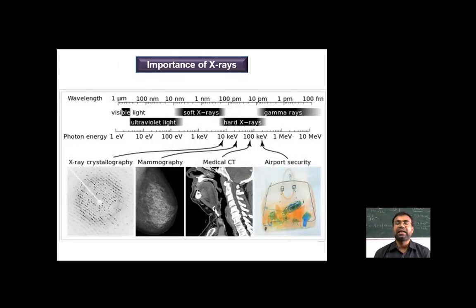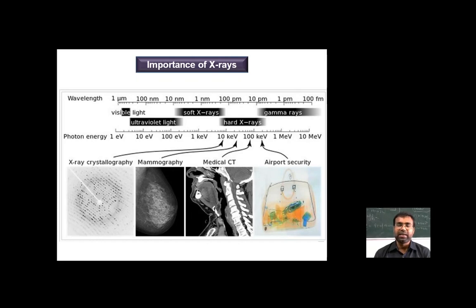X-ray photon energy and wavelength are utilized to examine the internal structure of various materials. Various parameters show the X-ray energy used for different applications: X-ray crystallography uses around 10 kV, while mammography and medical CT scans use around 100 kV, and airport security scanning also uses X-rays at appropriate intensities.